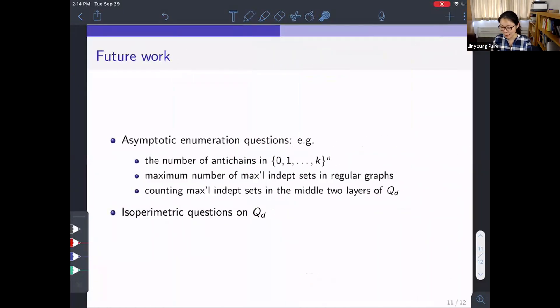Here are some questions that I am interested in. First, there are some asymptotic enumeration questions which are related to my work. For example, I am interested in the number of antichains in K^N rather than 2^N. Or what is the maximum number of maximum independent sets in regular graphs in general, not just Q_d. Or counting maximum independent sets in the middle two layers of Q_d, rather than the entire Q_d. So there are some questions. And the second part is, also I did not have time to talk about it in this talk, but our work is very closely related to some isoperimetric properties of the Hamming cube. For example, we proved one new isoperimetric inequality on Q_d. And I would like to continue on this direction. This is all for today. And thank you for listening.